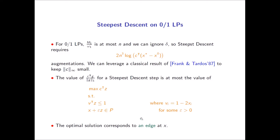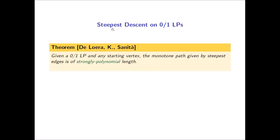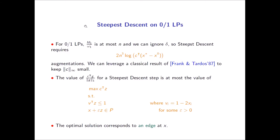Since steepest descent circuits are in fact steepest edges, everything we know about the circuit augmentation algorithm also applies to the monotone path generated by steepest edges on the one-skeleton. This bound carries through: for a zero-one LP starting from any vertex, the monotone path generated by taking steepest edges — normalized with the one-norm — is of strongly polynomial length. An audience member asked for clarification: zero-one LP here means the vertices are zero-one, i.e., the LP is defined over a zero-one polytope specifically.